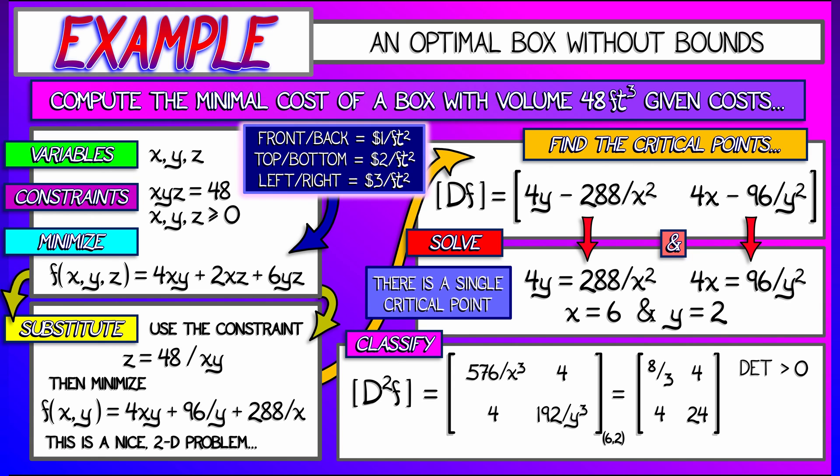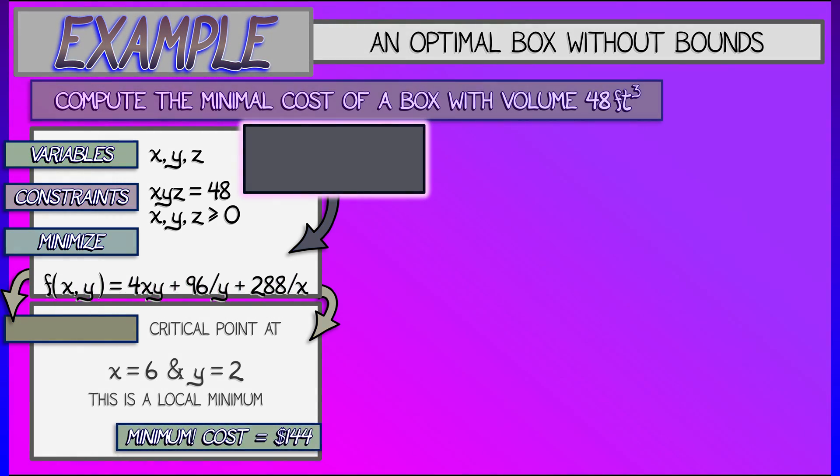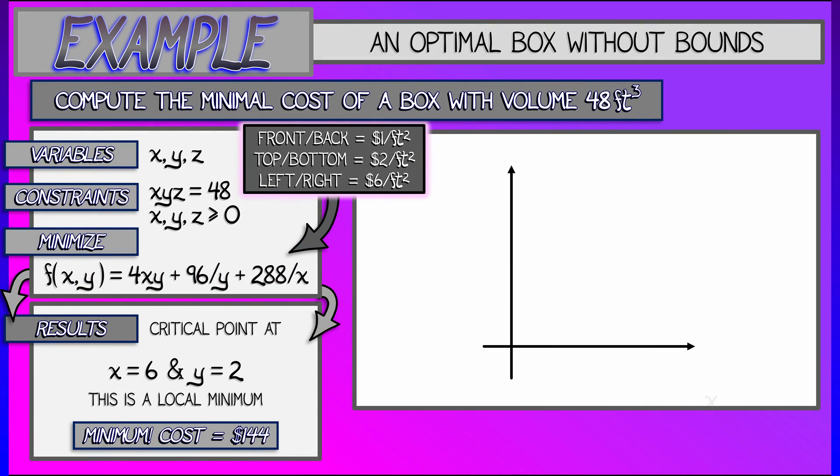This has positive determinant, positive trace. This is a minimum. And substituting in those values for X and Y gives us the minimal cost equal to $144. I feel pretty good about this solution, but we do have to check the boundaries. So let's see what this looks like.